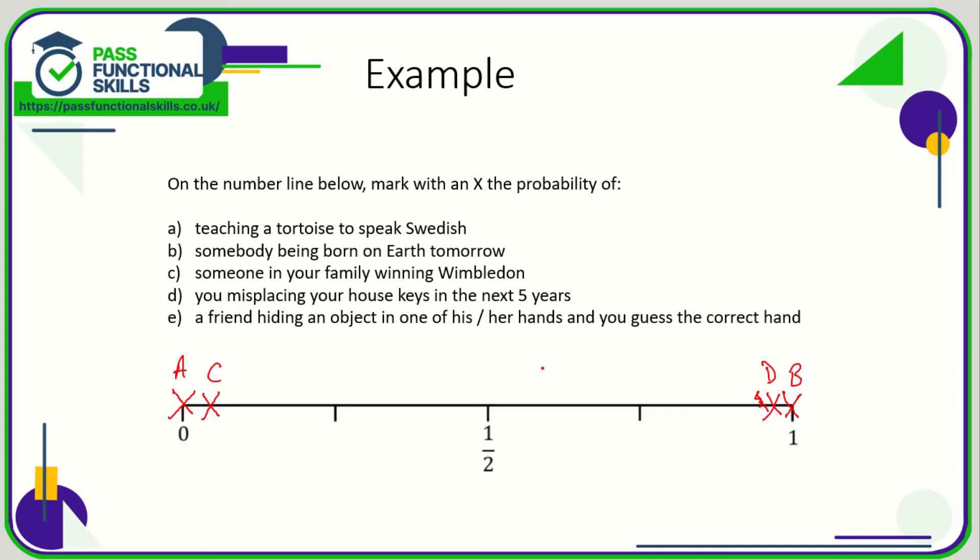Your friend hiding an object in one of his or her hands and you guess the correct hand. Well, your friend presumably only has two hands, so it's a 50-50 choice. Therefore, it's going to have a probability of one-half, so I'd mark the X exactly on the one-half there.